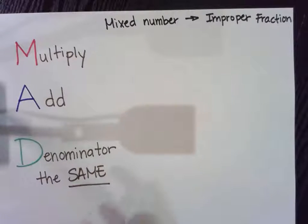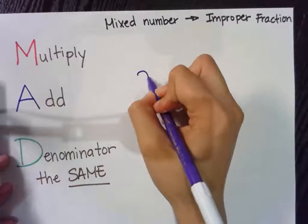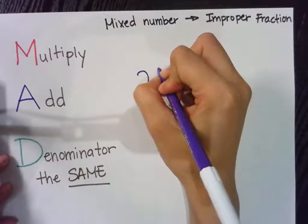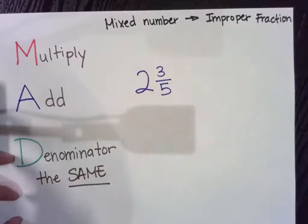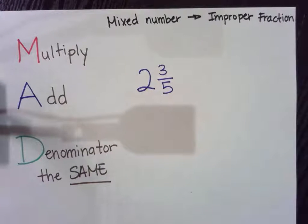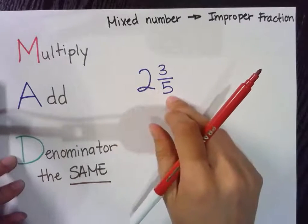Now I'm going to show you what that means. So here I will have a mixed number. That mixed number will be two and three fifths. Well you are going to first multiply your whole number with your denominator.